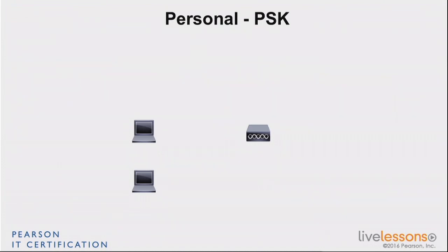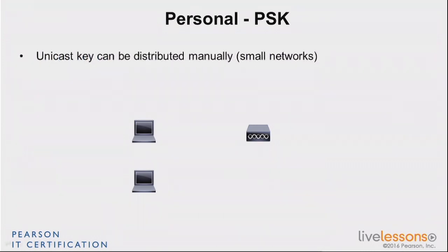So what you're going to do here, instead of authenticating each and every single station, you're just going to define a password — what we call a pre-shared key. That is going to be set on the access point or on the controller, and then set on each and every single client. That's very easy because you just define a password, and if it's a small network, it's pretty simple because you just configure each station.